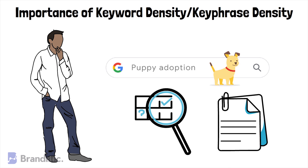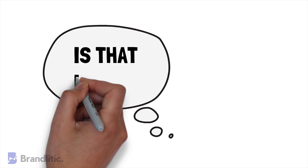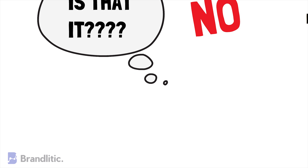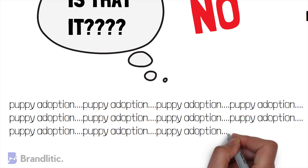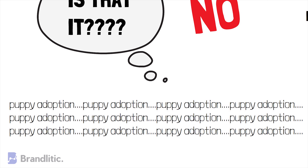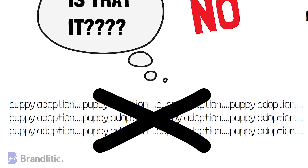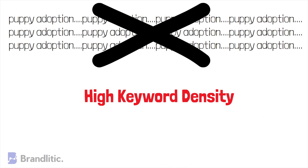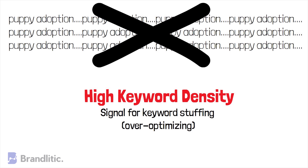Even though this comes naturally, many copywriters try to force it on readers. For instance, if you'd like to rank for 'puppy adoption,' you'd use this phrase regularly throughout your content without stuffing or spamming it. If you repeat your key phrase very often, it becomes unpleasant to read for visitors — something you should avoid at all times. A high key phrase density is also a signal to Google that you might be stuffing keywords, also known as over-optimizing, which can negatively affect your rankings.